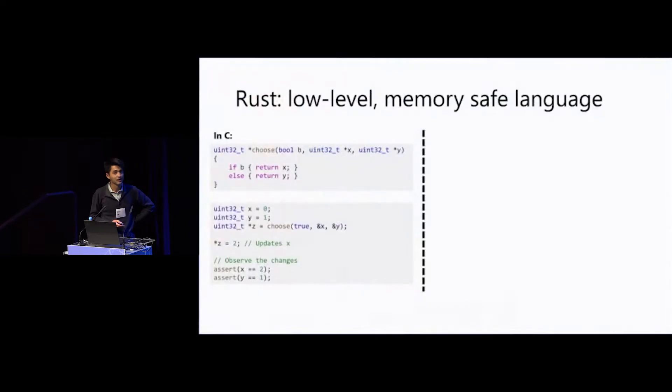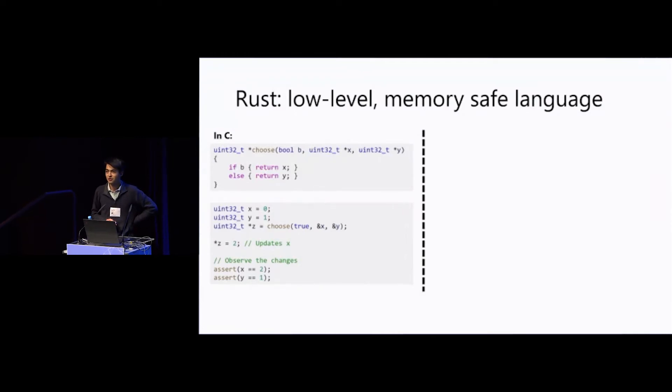I'm going to talk about AENEAS, which is a verification framework for safe Rust programs. A bit of context first: we target Rust, which is a low-level memory-safe language.